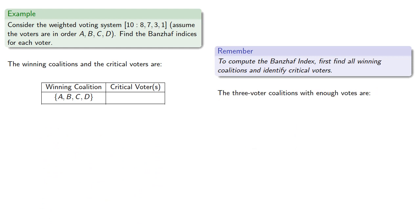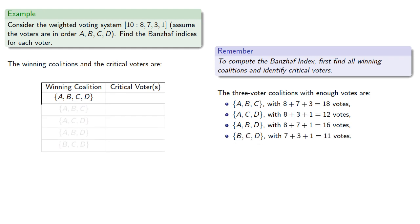Now let's consider the three-voter coalitions with enough votes. So A, B, and C together cast a total of 18 votes, A, C, and D cast 12 votes, A, B, and D cast 16, and B, C, and D cast 11 votes. So these three-voter coalitions are winning coalitions.